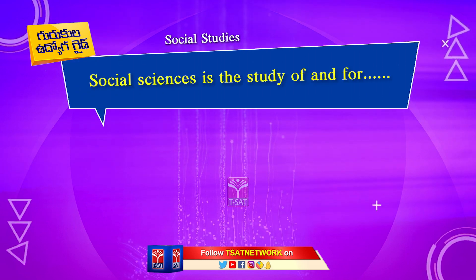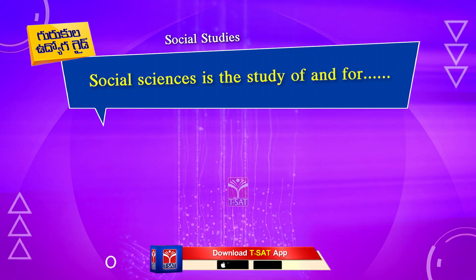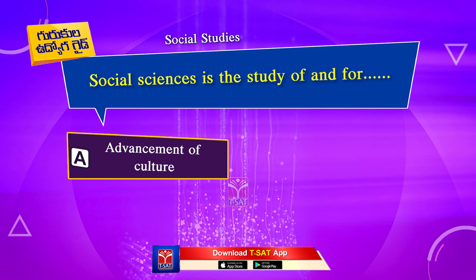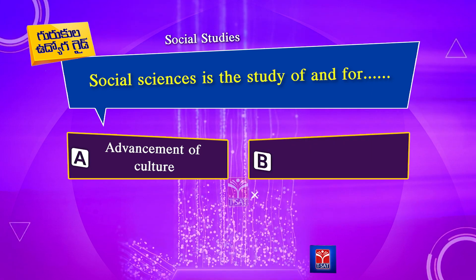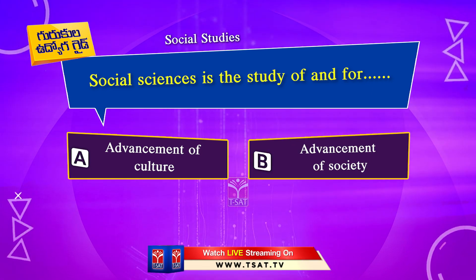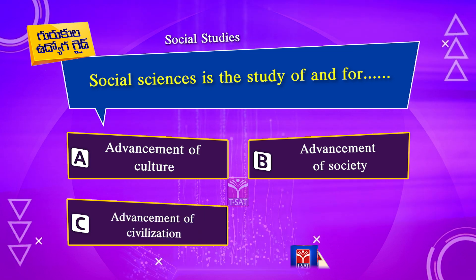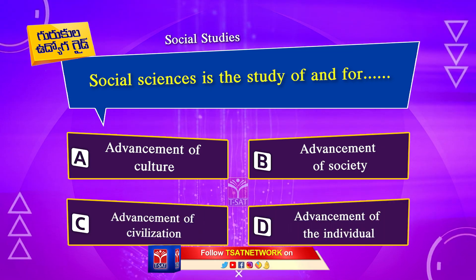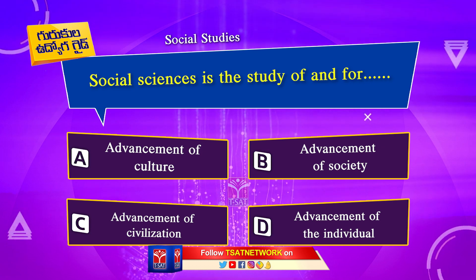Social Sciences is the study of and for: Option A. Advancement of Culture. Option B. Advancement of Society. Option C. Advancement of Civilization. Option D. Advancement of the Individual. Your time starts now.